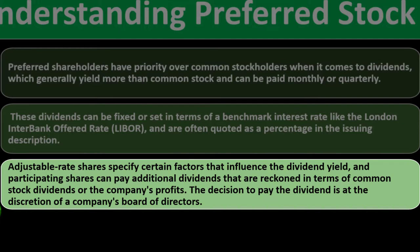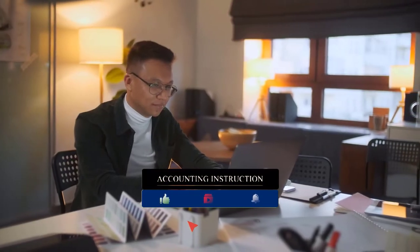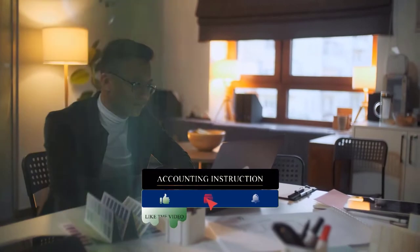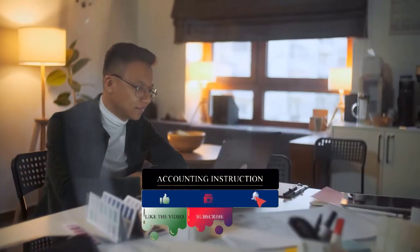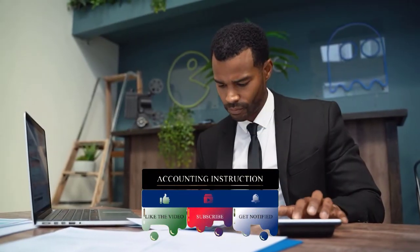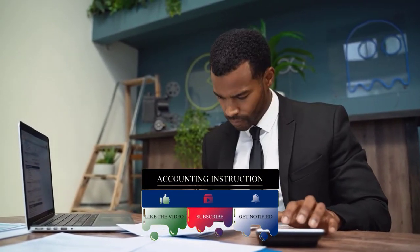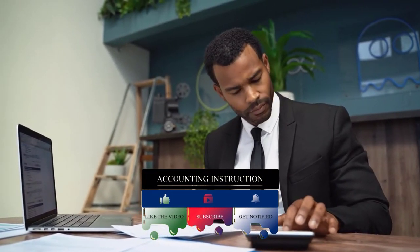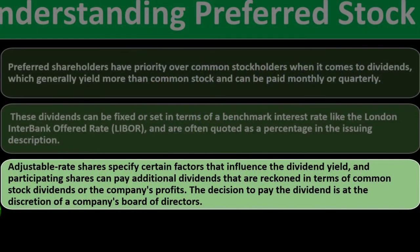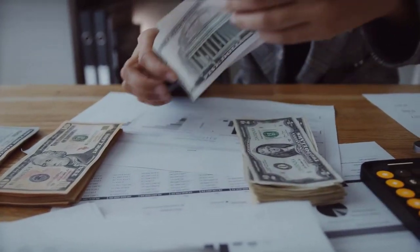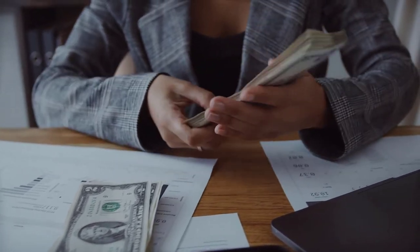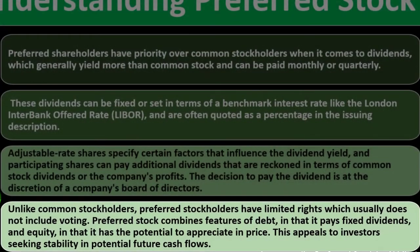Usually the preferred stock is still subject to the discretion of the board of directors — like common stock — to determine whether to pay the dividend. However, it may be structured so that if they do not pay the dividend, they might have to pay the unpaid dividends in future years before paying common shareholders. This structure is one way preferred stock works.